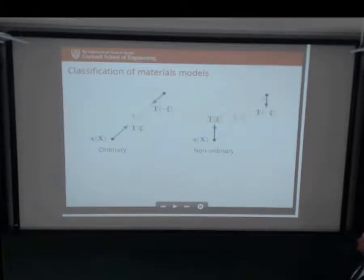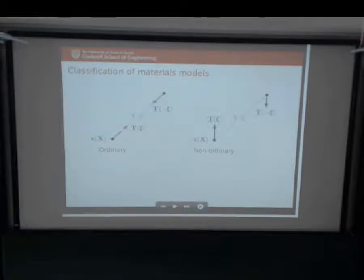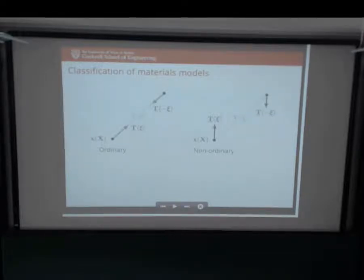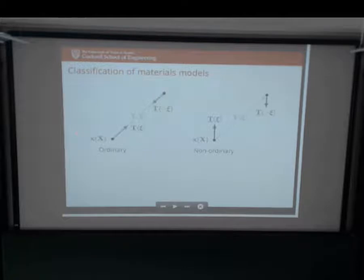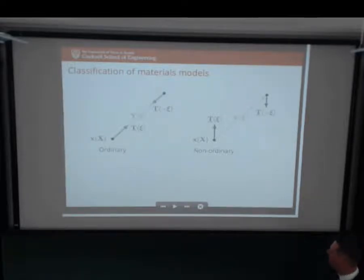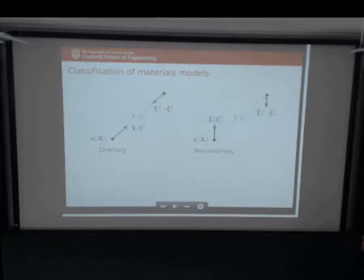Now we're going to talk about constitutive models - specifically the actual forms of these force vector states. We broadly classify them in peridynamics into two categories: ordinary and non-ordinary. In ordinary materials, these force vector states act along the direction of the deformation vector state. The nice thing about these models is that we can prove that no matter the form of T, as long as it's ordinary, it will always conserve angular momentum - an analogy with the symmetry of the Cauchy stress in the classical theory. Non-ordinary materials are where these force vector states act in some direction other than the deformation vector state, so angular momentum is not guaranteed.